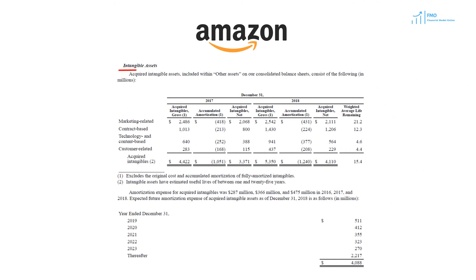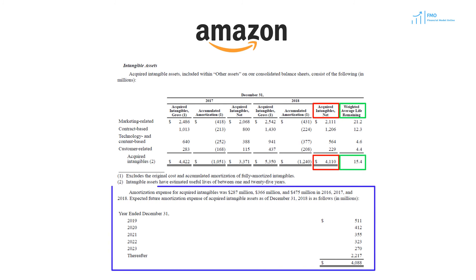Under the Intangible Assets Disclosure, Amazon reports the value of acquired intangible assets. We can see that the net value of acquired intangible assets is slightly over $4 billion, with a remaining useful life of 15.4 years. Furthermore, Amazon reports the expected amortization expense schedule for the next 5 years, which is required under US GAAP.